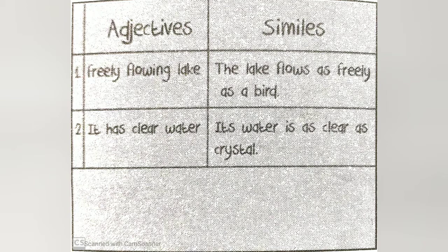We can use similes to make the paragraph more descriptive. We can use similes to describe the freely flowing lake, clear water, and kingfishers. We can write: the lake flows as freely as a bird. Its water is as clear as crystals. Kingfishers are as blue as the sea. And they fly like a flash when they catch fish. Using similes helps to make our paragraph more descriptive.